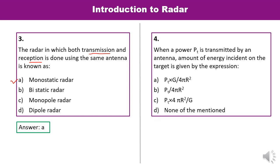Question 4: When a power Pt is transmitted by an antenna, the amount of energy incident on the target is given by the flux density at distance R, which is Pt divided by 4πR². When power Pt is transmitted, the gain of that antenna must also be considered. So A is the correct answer.